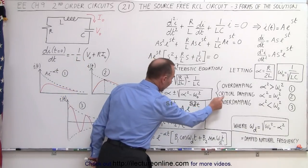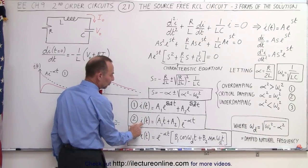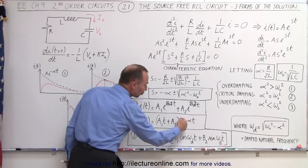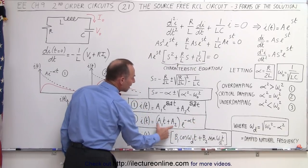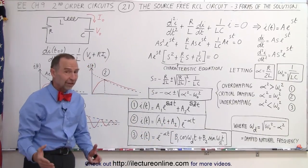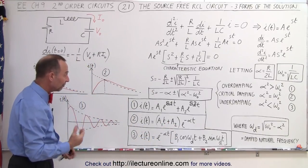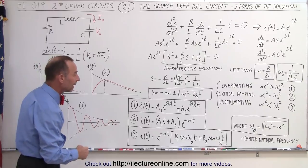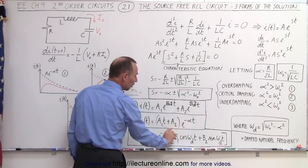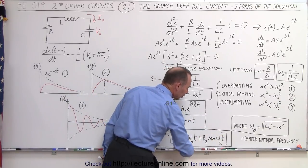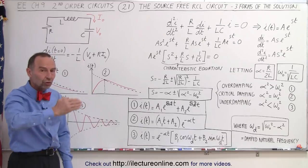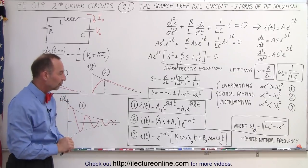For the critical damping case, the current equals e to the minus alpha t times the quantity A1t plus A2. Again, we'd have to find the values for A1 and A2. For the underdamping case, we still have e to the minus alpha t — notice that appears in every one of our solutions — but we multiply it times cosine and sine functions, which indicates an oscillating solution.